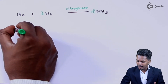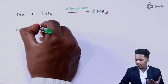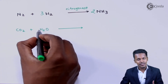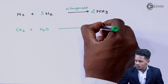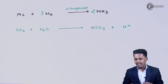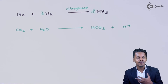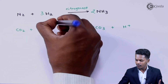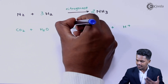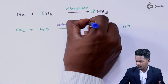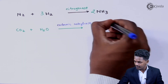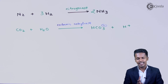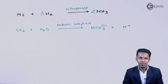Now let us discuss another reaction. Carbon dioxide reacts with water — this reaction takes place in our body, where consumed CO₂ reacts with H₂O to form bicarbonate HCO₃⁻ along with H⁺. This reaction doesn't occur on its own in the body; the enzyme plays a very vital role here. The enzyme is carbonic anhydrase, which acts as a catalyst in the conversion — that is, the hydrolysis of carbon dioxide — to form bicarbonate HCO₃⁻.